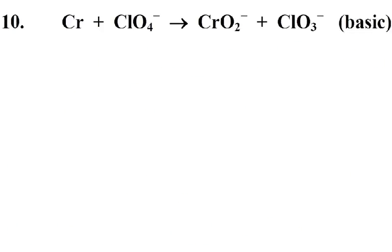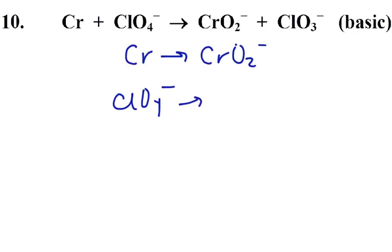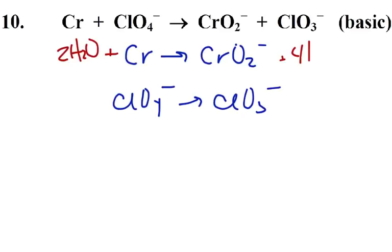Our last practice problem involves chromiums and chlorines. So Cr changes into CrO2 one-minus, and ClO4 one-minus turns into ClO3 one-minus. For the first equation, the chromiums are balanced. We need two oxygens, so we'll add two waters on the left - that gives us four hydrogens, so we add four H pluses on the right. Total charge on the left is neutral, total charge on the right is positive three, so I'm going to add three electrons on the right side.